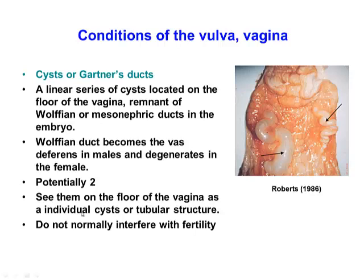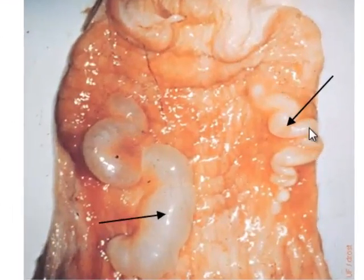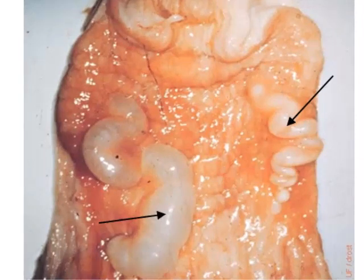Let's look at Gartner's ducts, which you may see in the floor of the vagina. These are remnants of the Wolffian or mesonephric ducts, which are part of the male reproductive system in the embryo. The Wolffian ducts in a male become the vas deferens, but in the female they degenerate. In some cases remnants of those ducts persist as tubular-like structures in the floor of the vagina, potentially one on each side. They don't normally interfere with fertility.